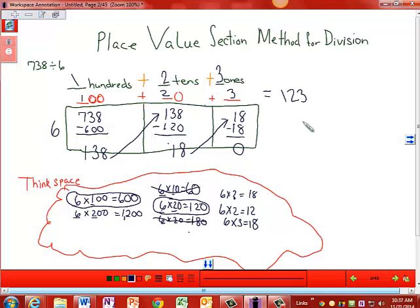How could we check this division problem? To check the division problem, you multiply your quotient times your divisor. And if you have a remainder, you'd add the remainder. But notice how we don't have a remainder. So we're just going to multiply the quotient 123 times the divisor. And that answer should equal your dividend if you calculated the division problem accurately.